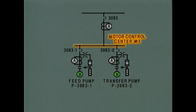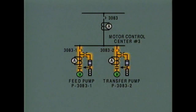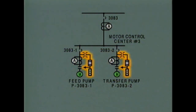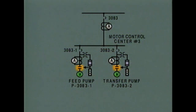Power then flows to the motor control center. A motor control center is basically a bus that supplies power only to motors. This motor control center includes two identical motor circuits. Each motor circuit includes a power circuit and a control circuit. In each power circuit, power flows through a circuit breaker and a current transformer, then to a motor contactor.